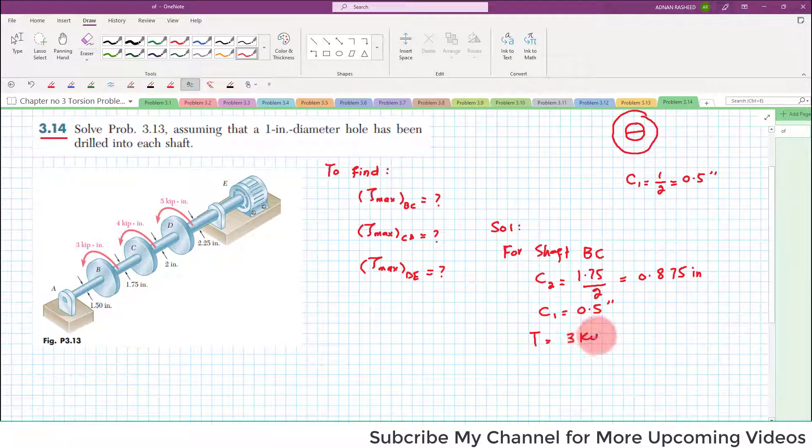You can also draw the free wire diagram but it is not necessary to draw if you understand the figure. Now we know that maximum shearing stress is equal to T into C over J. You can also use this formula or you can also use 2T over pi C cube. But since it is hollow circular shaft so we will need outer radius minus inner.